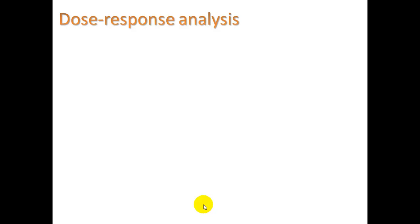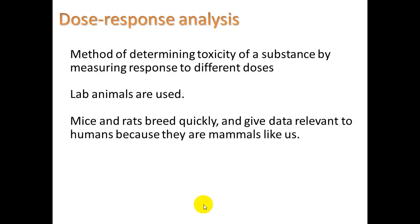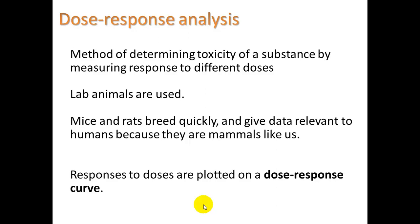Another way of analyzing toxicity is dose-response analysis — a method of determining toxicity of a substance by measuring response to different doses. Lab animals are used: we give a set of 100 animals different doses and see what dose causes lethality or some effect. Mice and rats are usually used because they breed quickly and give data relevant to humans since they are mammals like us — relevant to humans, not identical, because they do have different physiology, but we're both mammals so we have a lot in common.